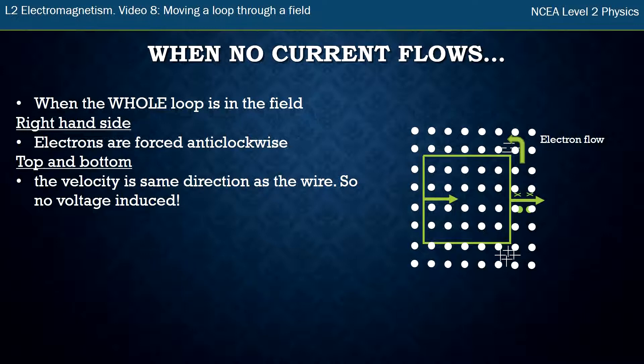We need the velocity, we need the wire and we need the magnetic field lines to be perpendicular in order to induce the voltage. So in this case because the wire along the top is going the same direction as the velocity, no voltage is induced.